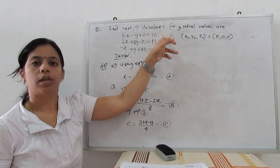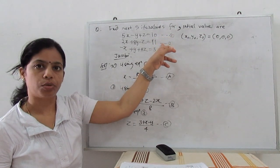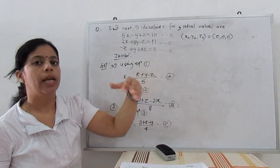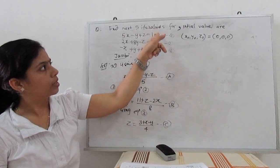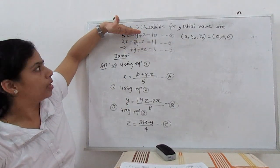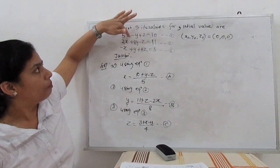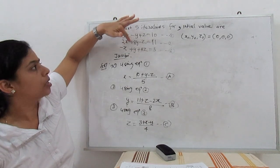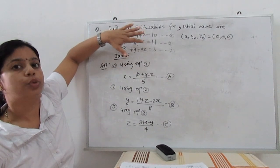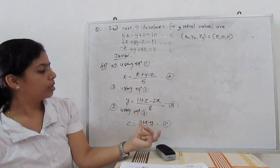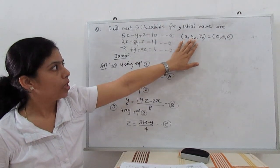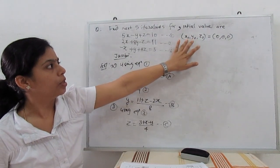This is the first step of the Jacobi method. From the first equation, take x; from the second, take y; from the third, take z. It is not necessary that the order is fixed — whatever order the equations are given, use one equation for x, one for y, and one for z.